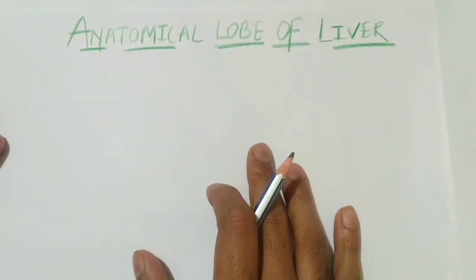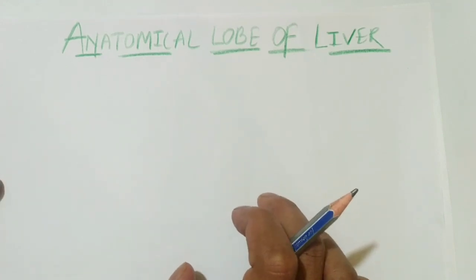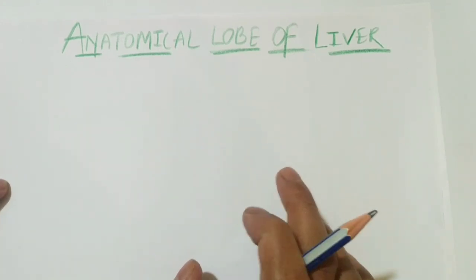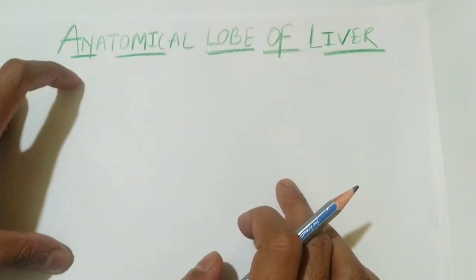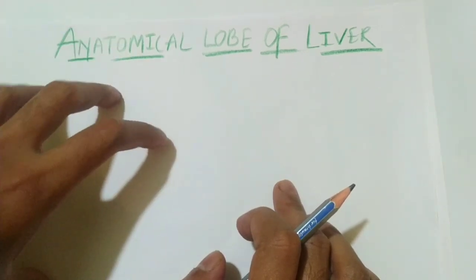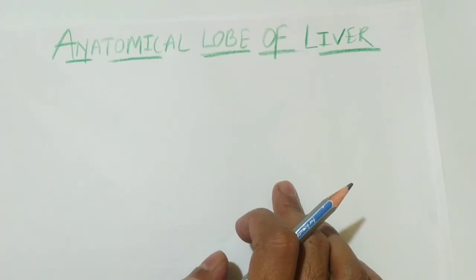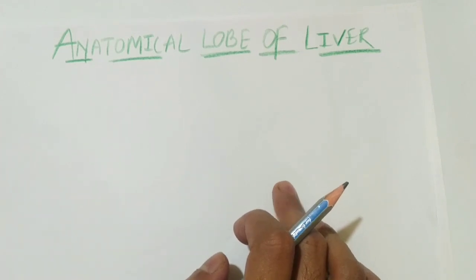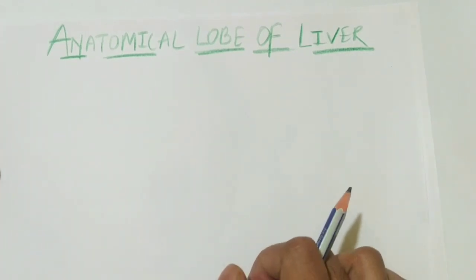Hello everyone, this is Suyash here. In this video we are going to discuss the anatomy of our liver — specifically the external structure, the boundaries, surfaces, and lobes of the liver. We will discuss how the lobes are divided on the basis of surfaces. In the next video we will see about the ligaments of the liver. These will be short videos so it will be easy for you to revise. Let's begin with the anatomical lobes of the liver.